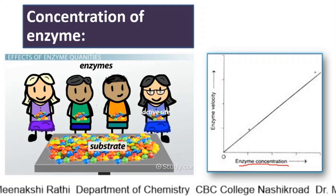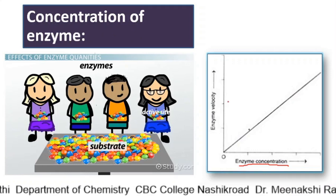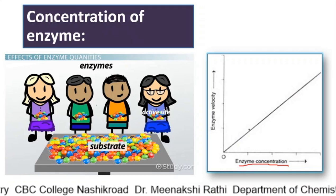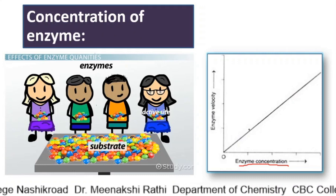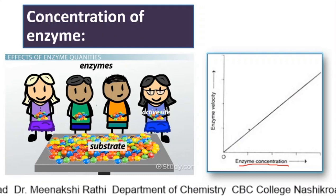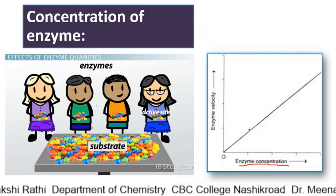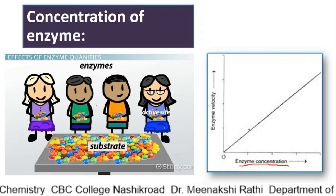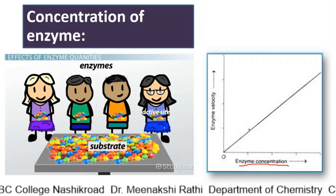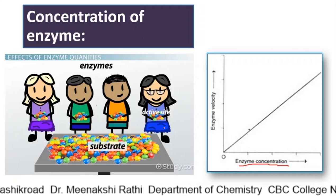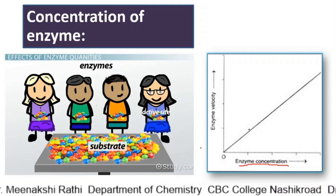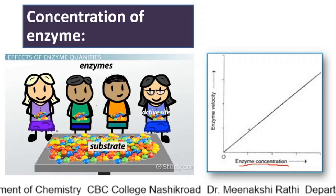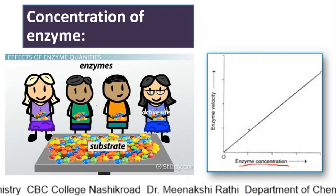Formation of enzyme-substrate complex is one of the important parts here. In this picture, you can see gems kept on a table. Consider these gems are the substrate and the children are the enzyme, and their hands are the active sites. As the number of children increases, the number of active sites increases, so they can grab more and more substrate and more enzyme-substrate complexes can be formed, which ultimately increases the rate of reaction.